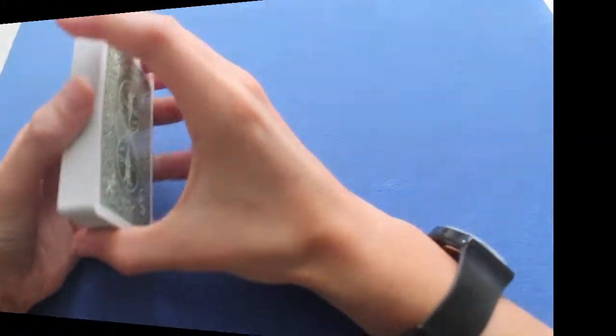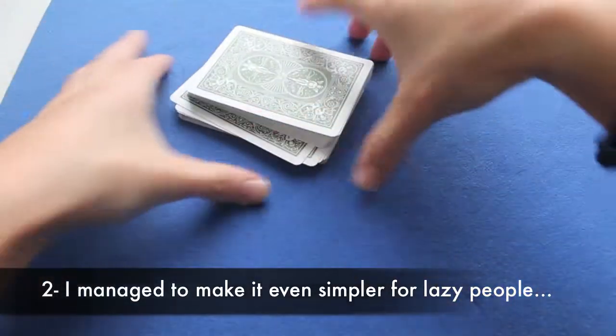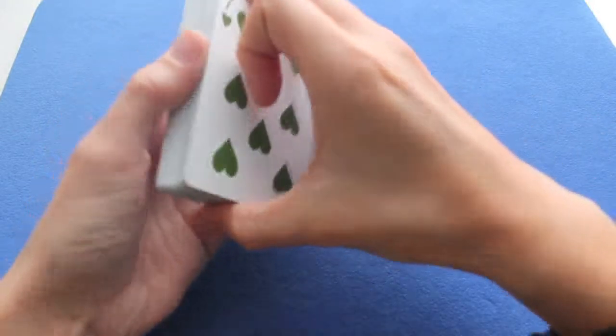The next one is even simpler. So look, I cut the deck and 7 of hearts, 7 of diamonds.